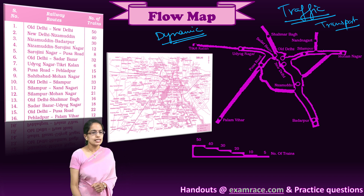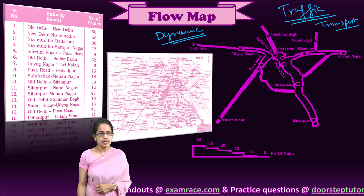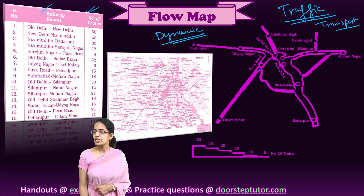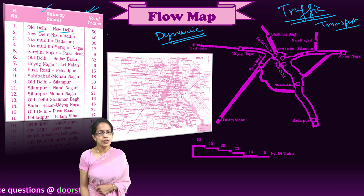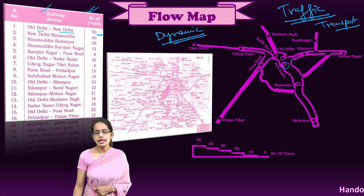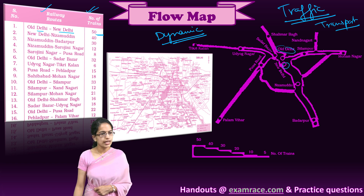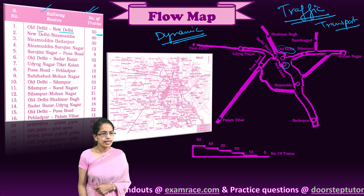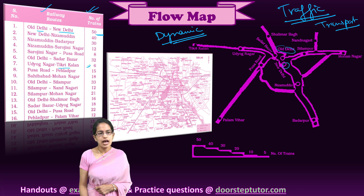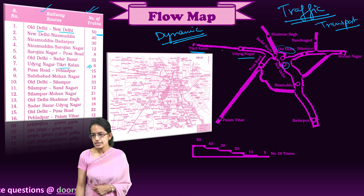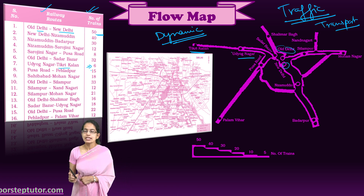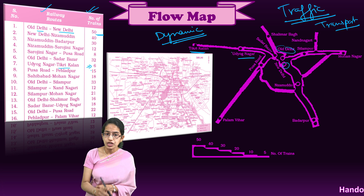Here we have taken a railway route example with the number of trains going through each route. For example, between Old Delhi and New Delhi there are 50 trains running. Then we have Udhyognagar to Tikri Kalan, where only six trains are running.